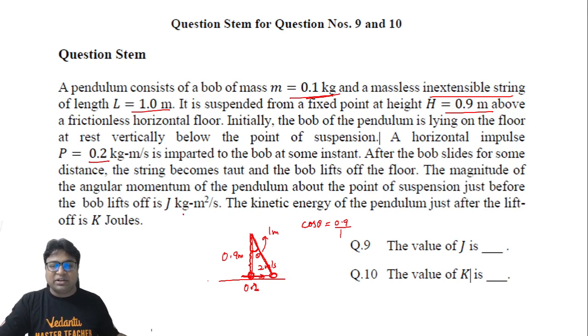Now what happens to the particle? Let's try to understand that by drawing a larger figure. We want to calculate the angular momentum of the pendulum just before the bob lifts off and the kinetic energy just after the lift-off. The situation is somewhat like this: there's the horizontal surface, the bob was here, the string was slack, then the bob traveled to this point where the string got tightened. This angle was theta and we already know the value of cos theta is 0.9.